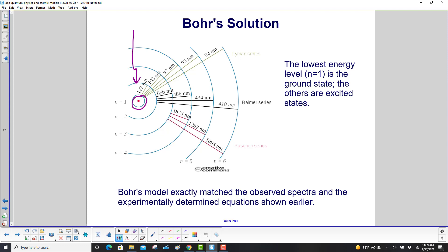Bohr's model, again we're going to say it, exactly matched the observed spectra in the experimentally determined equations from Paschen, Balmer, and Lyman using the Rydberg constant. So, a transition from, let's see, n equals 4 to n equals 1, that's 486 nanometers, that would be the wavelength of that photon, and that is part of the Balmer series.